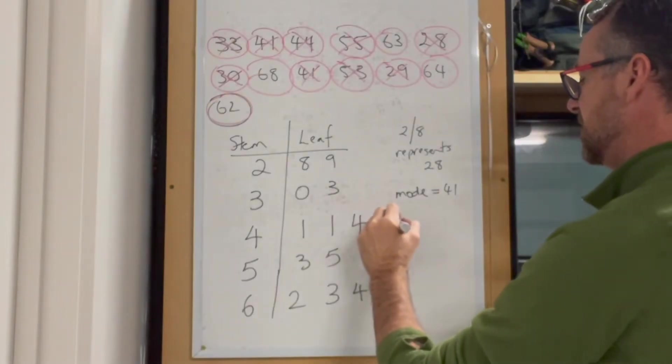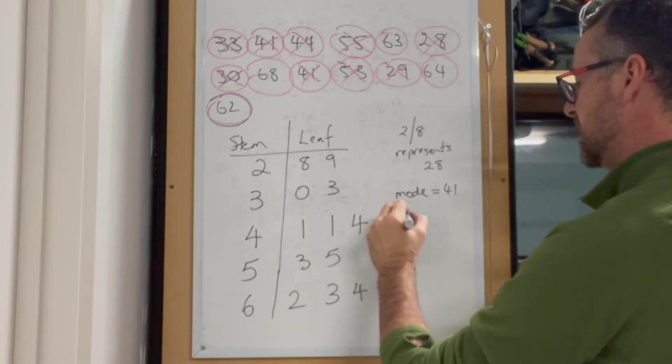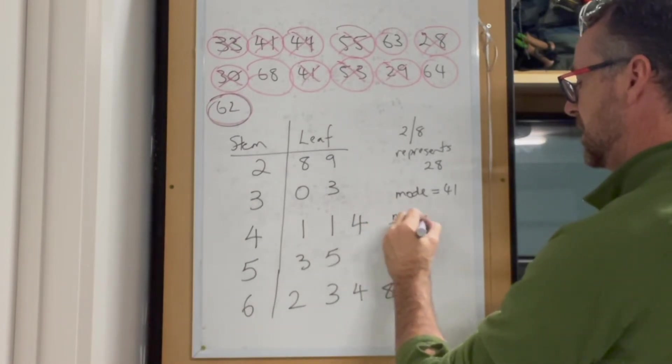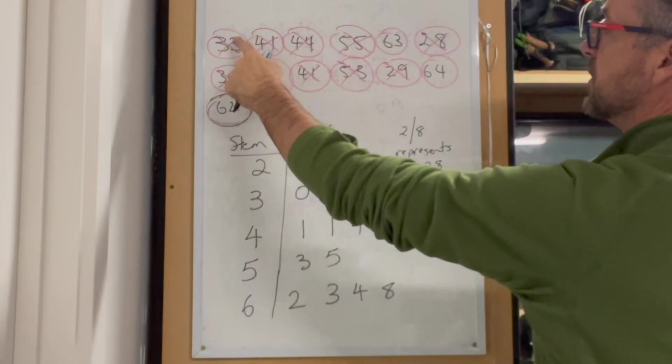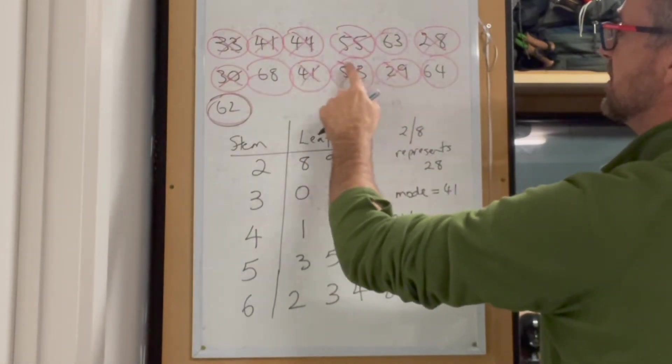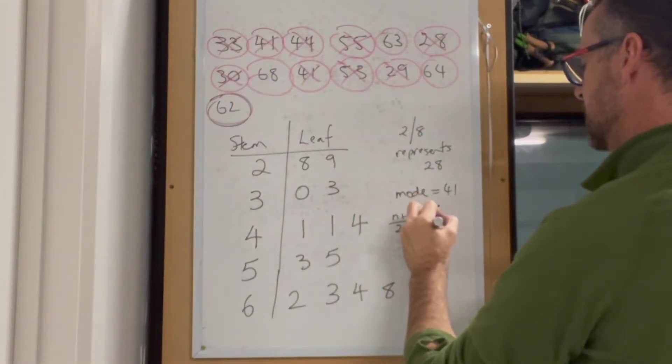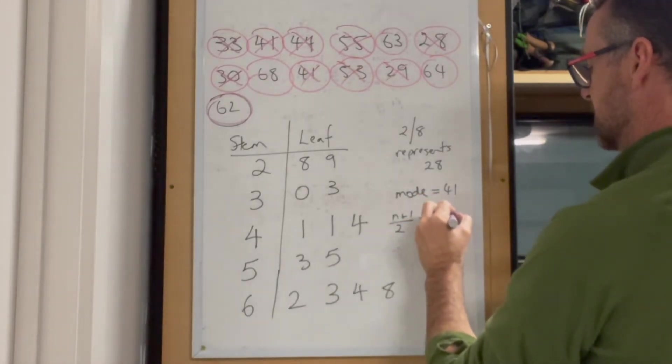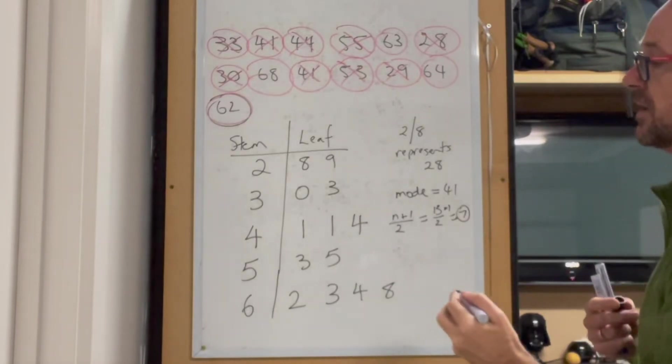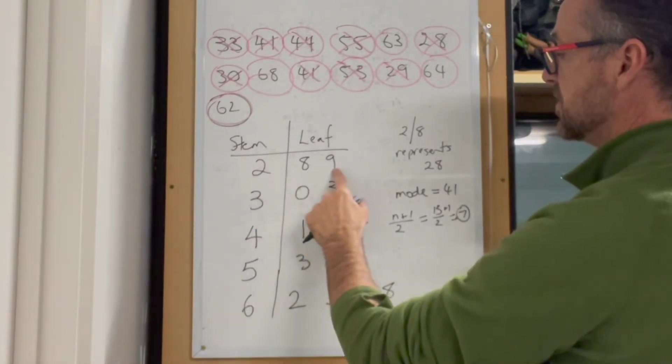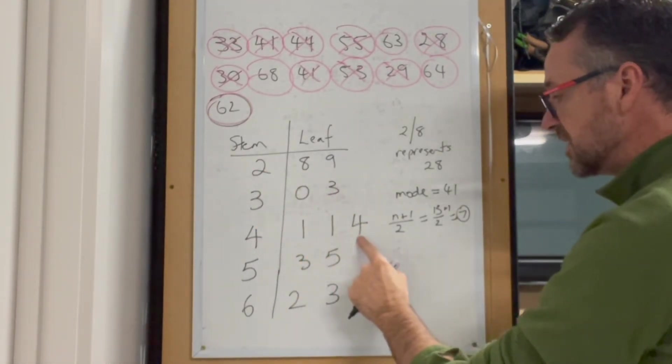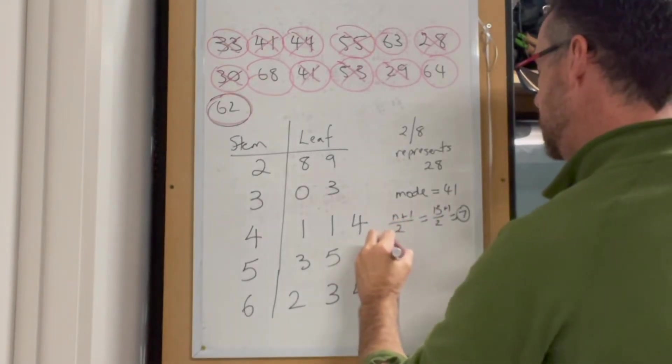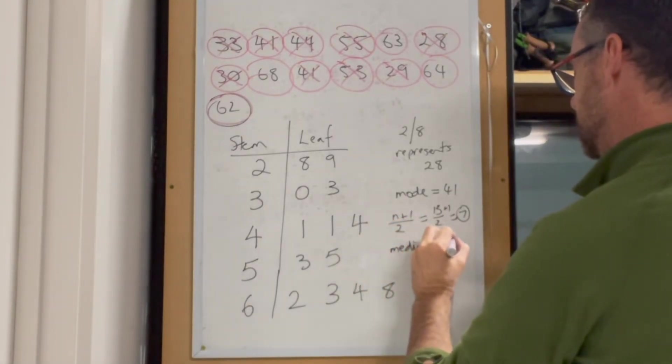The median is the middle number. We use n plus 1 over 2. The number of values is 13, so it's 13 plus 1 over 2, which equals 14 over 2. That's the seventh value. Counting 1, 2, 3, 4, 5, 6, 7 - that's 44. So our median equals 44.